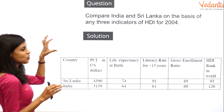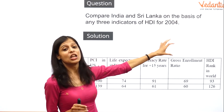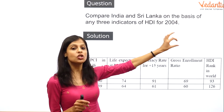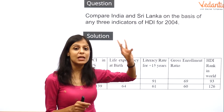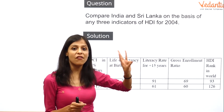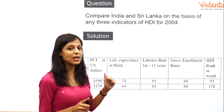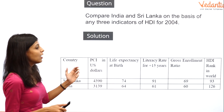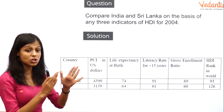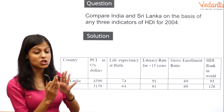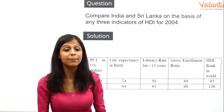Human Development Index is used to compare countries based on three fundamental parameters. The third parameter — education — has also been further divided or distributed into two dimensions.